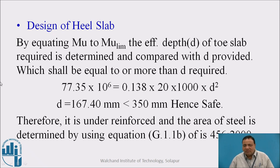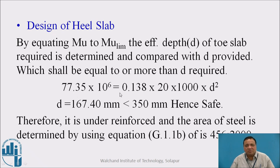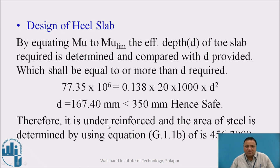That completes the analysis of heel slab. Now for the design of heel slab, we equate MU with MU limit to find the required effective depth. So, 77.35 × 10⁶ = 0.138 × fck × b × d², where fck = 20 and b = 1000 mm. This gives d required = 167.4 mm, which is less than the 350 mm provided. Hence it is safe, and the section is under-reinforced.